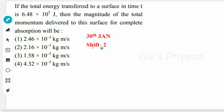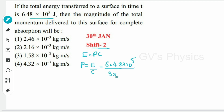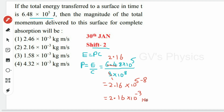Next question from the same shift: if the total energy transferred to a surface in time t is 6.48 × 10⁵ J, the magnitude of total momentum delivered to the surface for complete absorption is? For a photon, E = pc, so p = E/c. Substituting: p = 6.48 × 10⁵ / (3 × 10⁸) = 2.16 × 10⁻³ kg·m·s⁻¹. Option 2 is the right answer.